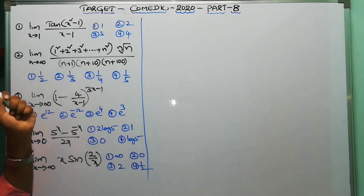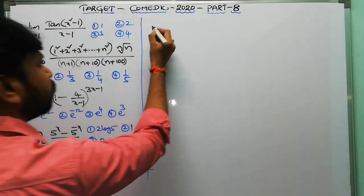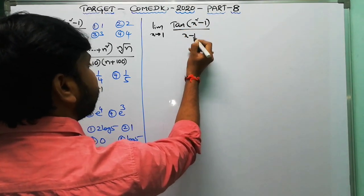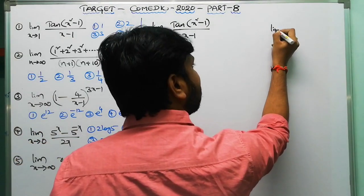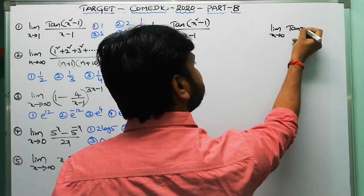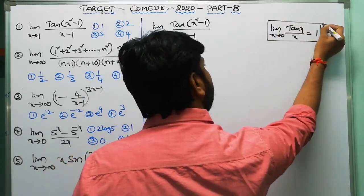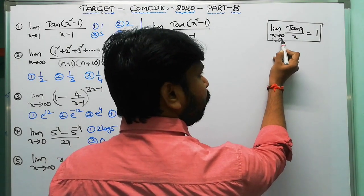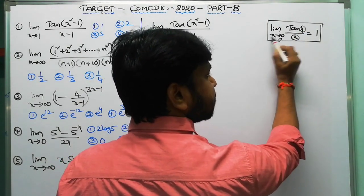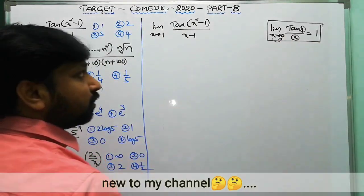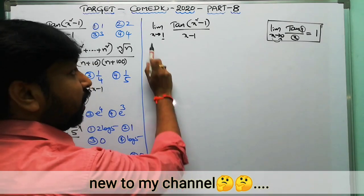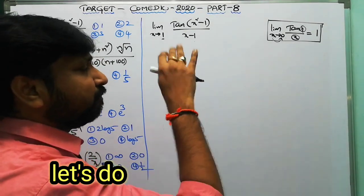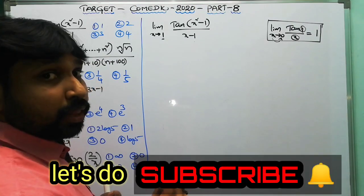First question: limit x tends to 1, tan of (x²-1)/(x-1). Very easy question. To simplify this kind of question, use the formula: limit x tends to 0, tan(x)/x = 1 (by sandwich theorem). Whenever three matchings exist, the result is 1. Here x tends to 1, not 0, and we have x²-1 and x-1 — three different functions. Using one small technique, you can convert everything into that formation.